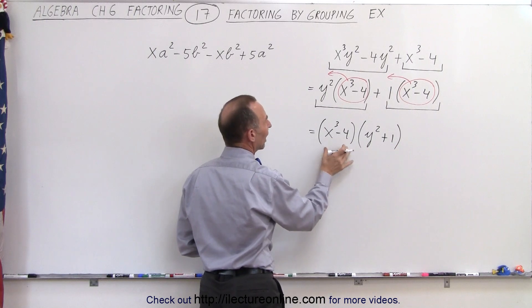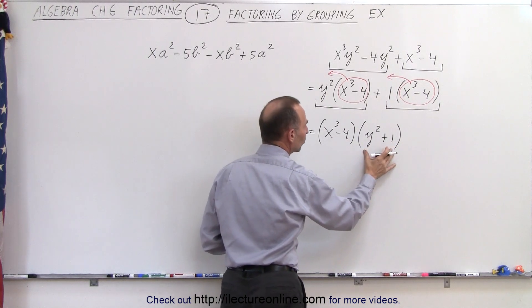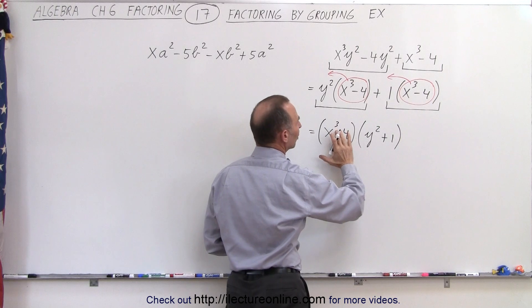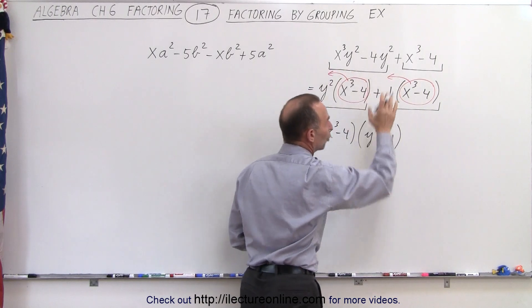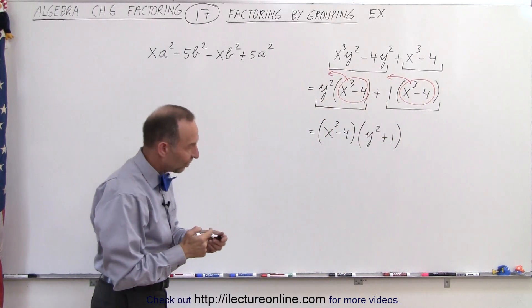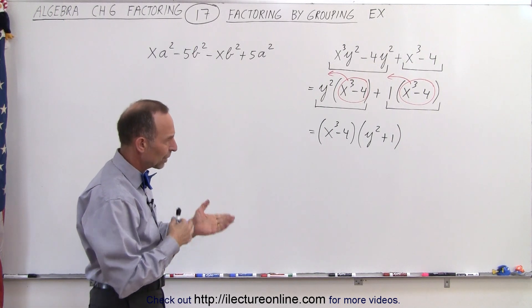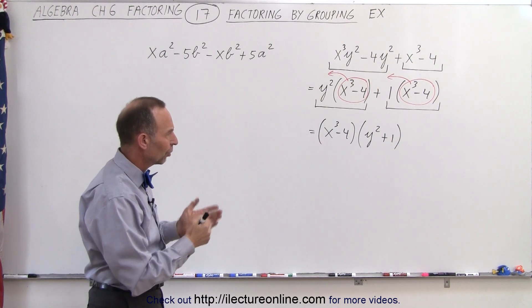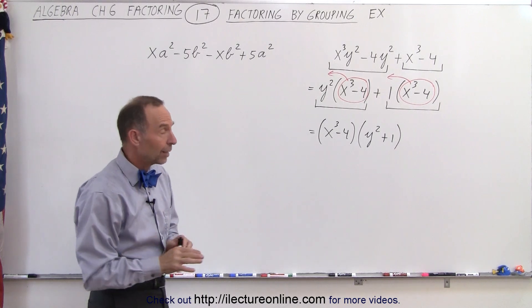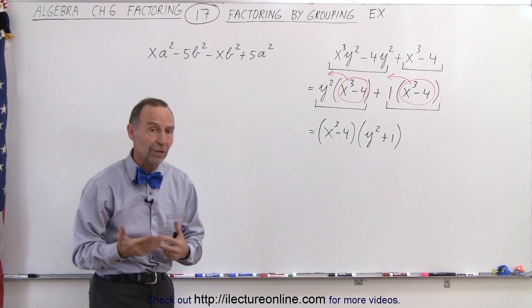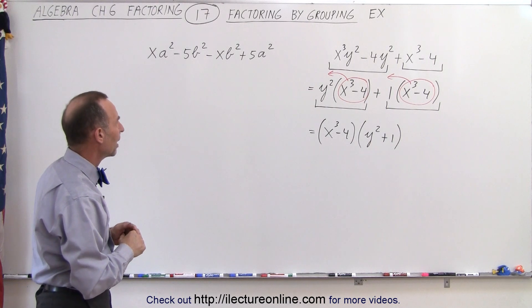So this now becomes x-cubed minus four times y-square plus one, and we've successfully factored it. We've now written our polynomial of four terms as a product of two binomials. Now it turns out that we cannot factor it any further, so that's as far as we can go.